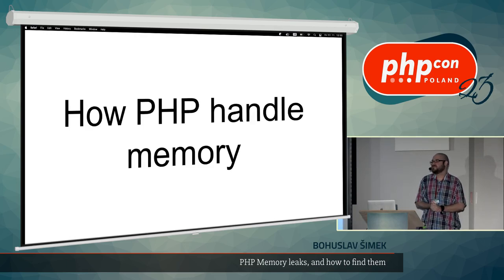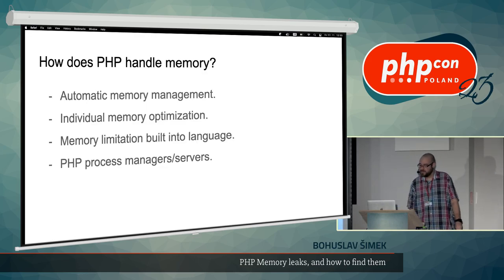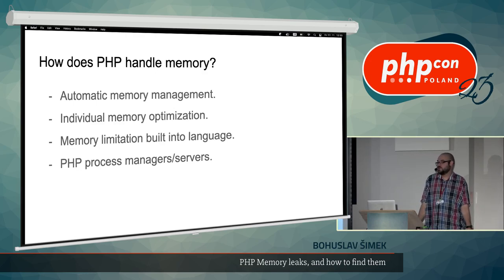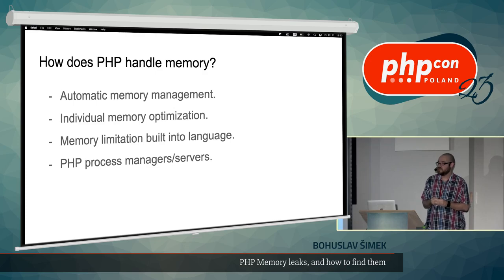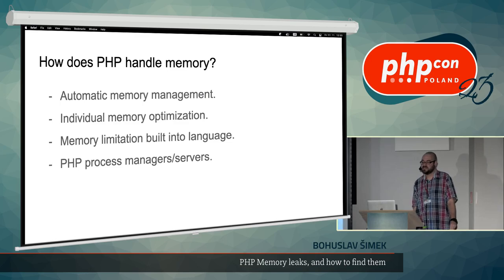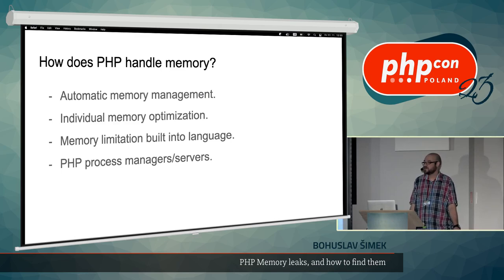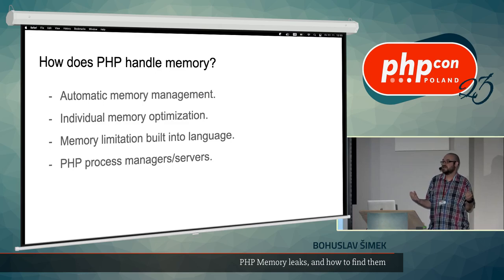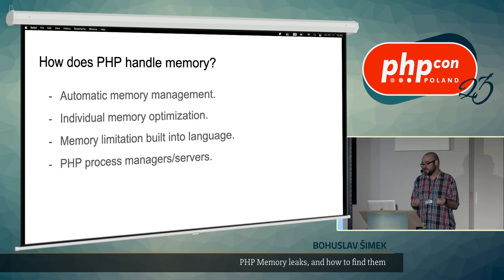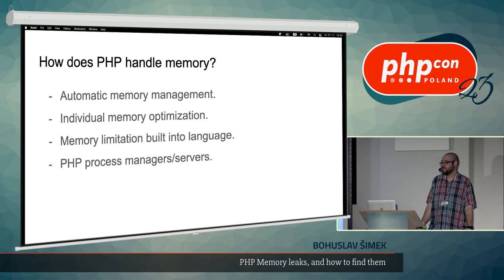If we want to debug memory usage in PHP, we should know at least broadly how PHP handles memory, because there can be a few surprises. PHP has automatic memory management, implemented through something called reference counting, and it also has garbage collection. It has a few interesting individual memory optimizations — we will discuss the copy-on-write array. There is also a memory limitation built into the language, which is actually one of your best friends during development, because when there is no memory limit and memory is exhausted, your server can simply crash, which is a bigger problem than a script not finishing.